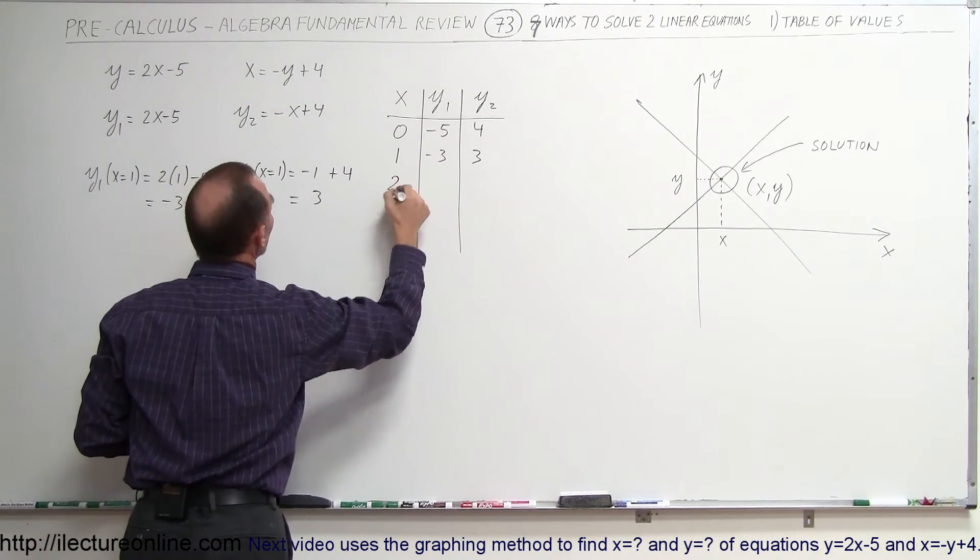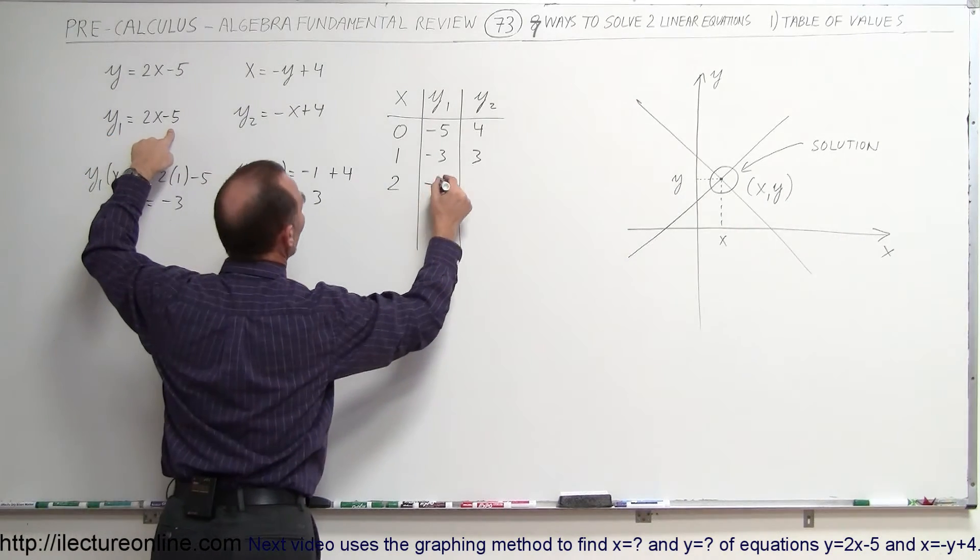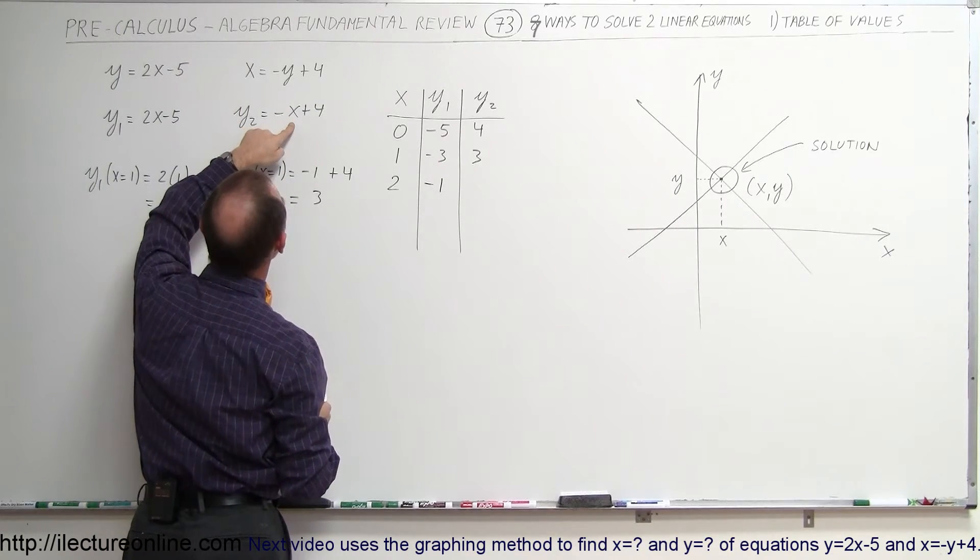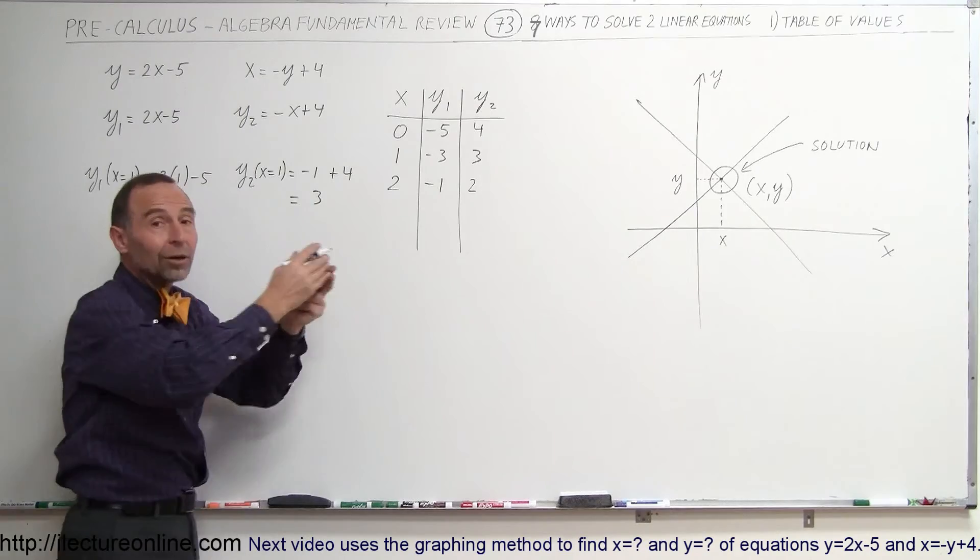What happens when x equals 2? When x equals 2, I get 2 times 2, which is 4 minus 5, which is a minus 1. When I plug in minus 2 there, minus 2 plus 4 is a plus 2. Notice how they're getting closer and closer together.